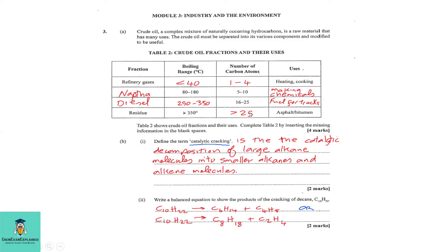We must now fill in the number of carbons for the residue fraction. This is the heaviest, with a boiling point beyond 350°C. The uses would be for asphalt, and the number of carbons would be above 25.